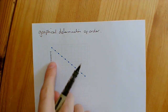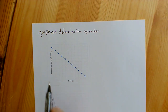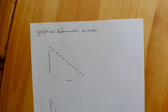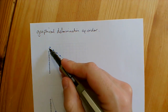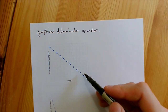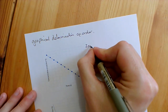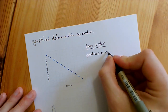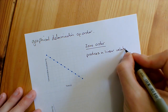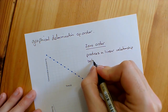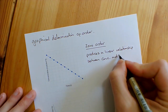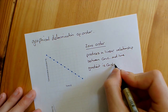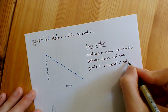In this first graph, we have a linear correlation between concentration and time. Because it's linear, the gradient doesn't change — it stays the same. If the gradient doesn't change, then the rate doesn't change. So as the concentration of our reactant is decreasing, the rate is remaining constant — it must be a zero order reactant. Zero order produces a linear relationship between concentration and time, with a constant gradient and therefore constant rate.